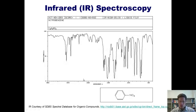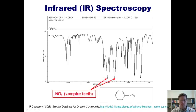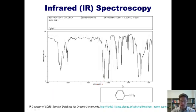Here is an IR containing a nitro-containing compound — nitrobenzene. You can see there are two vampire teeth coming down, one around 1600 and one around 1400. That's indicative of an NO2.